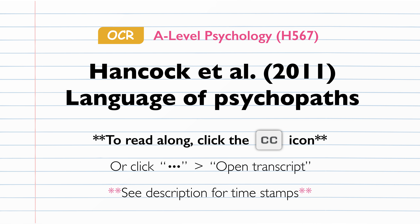Psychopaths also produced more subordinating conjunctions in their narratives in order to explain their actions, such as because, since, as, and so that. The extent to which the participants felt detached from their crime was examined through the analysis of past and present tense verbs. It was found that psychopaths used more past tense verbs compared to non-psychopaths, such as 'stabbed', and fewer present tense verbs such as 'stab'. Psychopaths produced a higher rate of articles than controls, revealing that their language involved more concrete nouns, and their language was also less positive, less emotionally intense, and significantly less fluent. However, there were no significant differences overall in emotional content in relation to pleasantness or imagery.